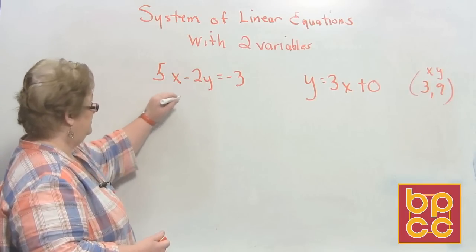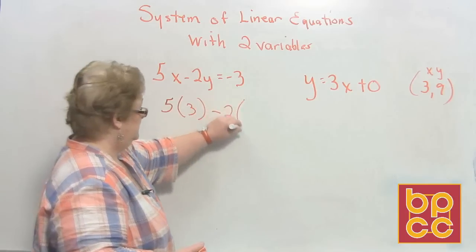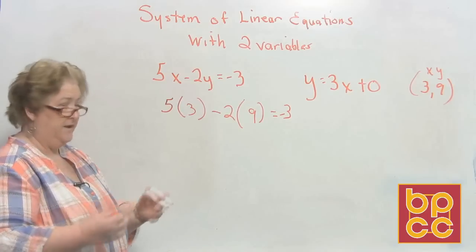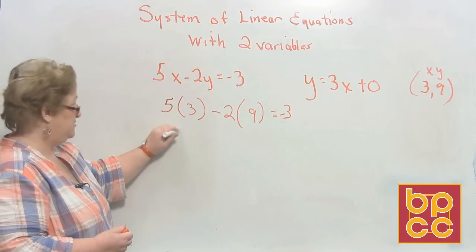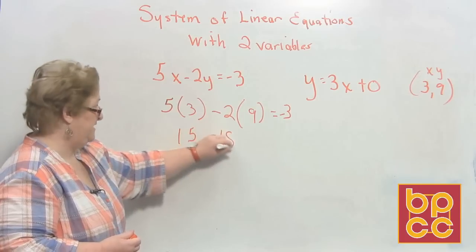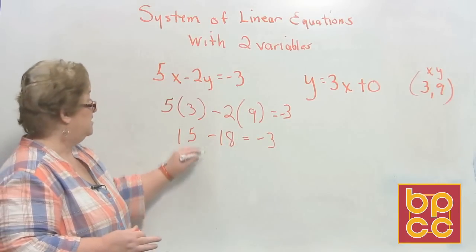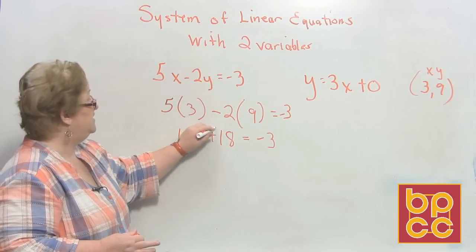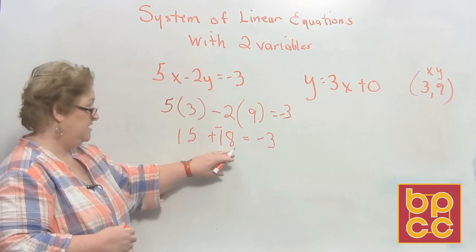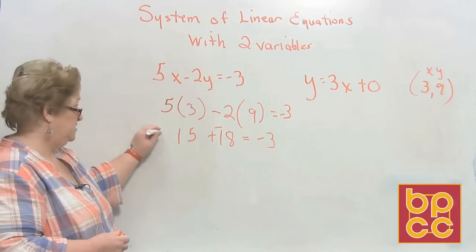We're going to go 5 times 3 minus 2 times 9 equals negative 3. 5 times 3 is 15, negative 2 times 9 is negative 18, equals negative 3. We keep, change, and add the opposite. 15 plus negative 18 is negative 3. So 3 comma 9 does work in this one.